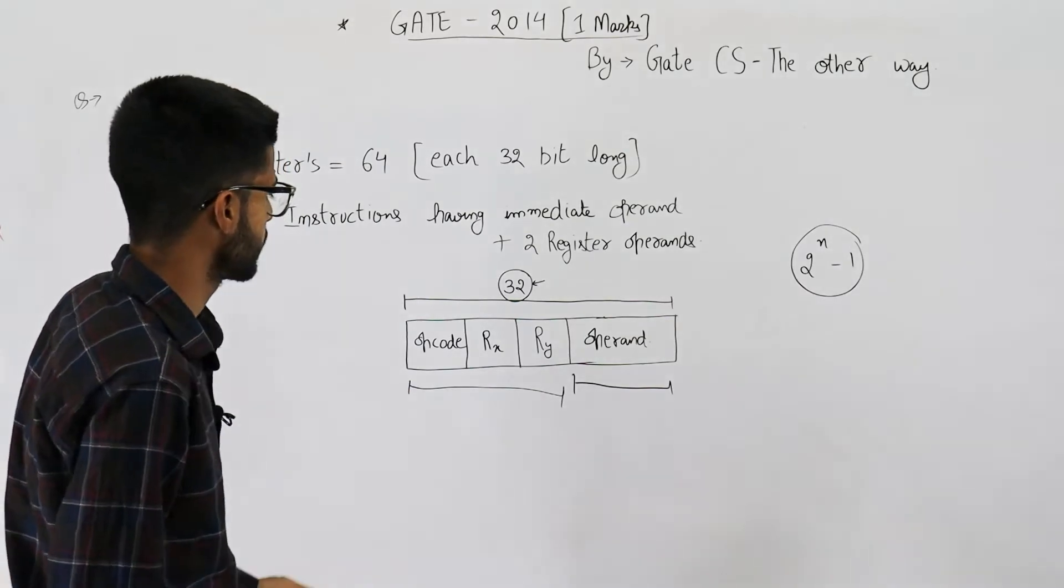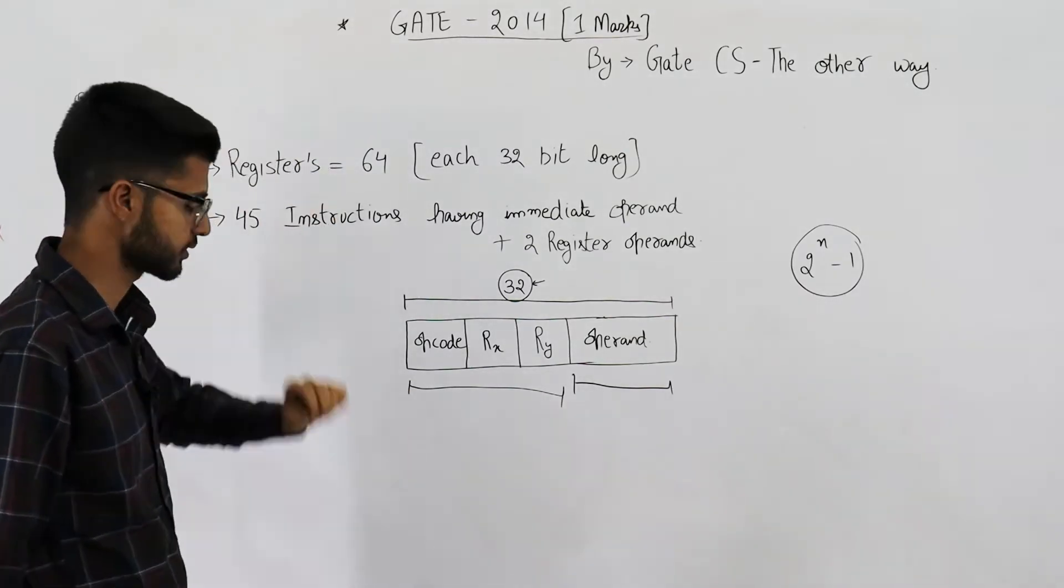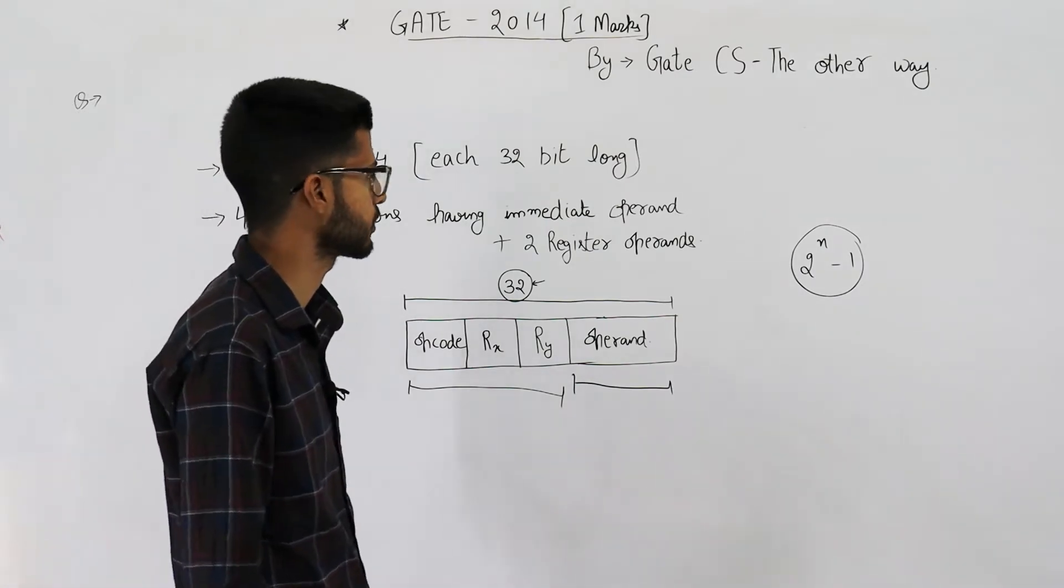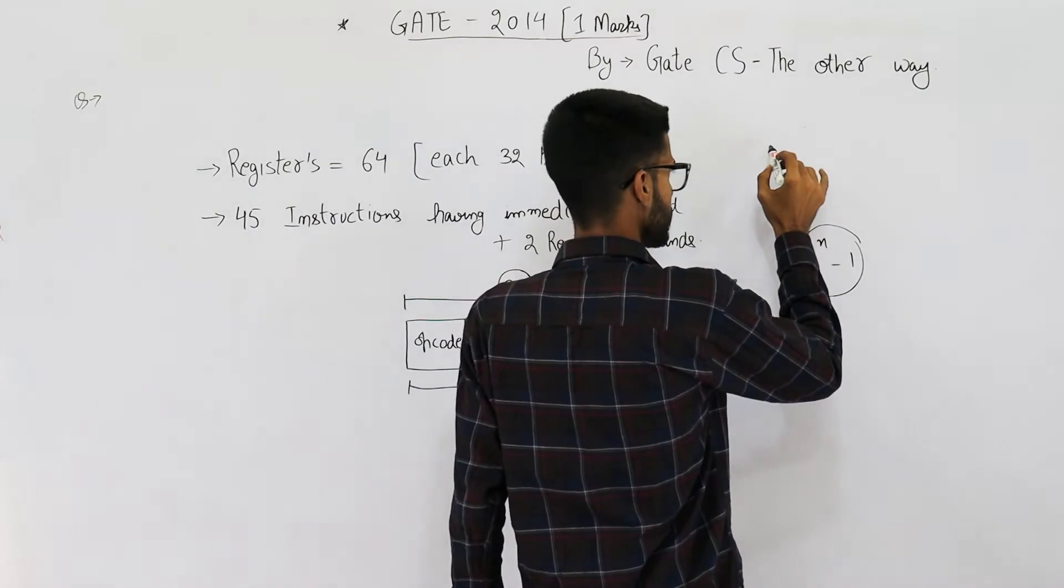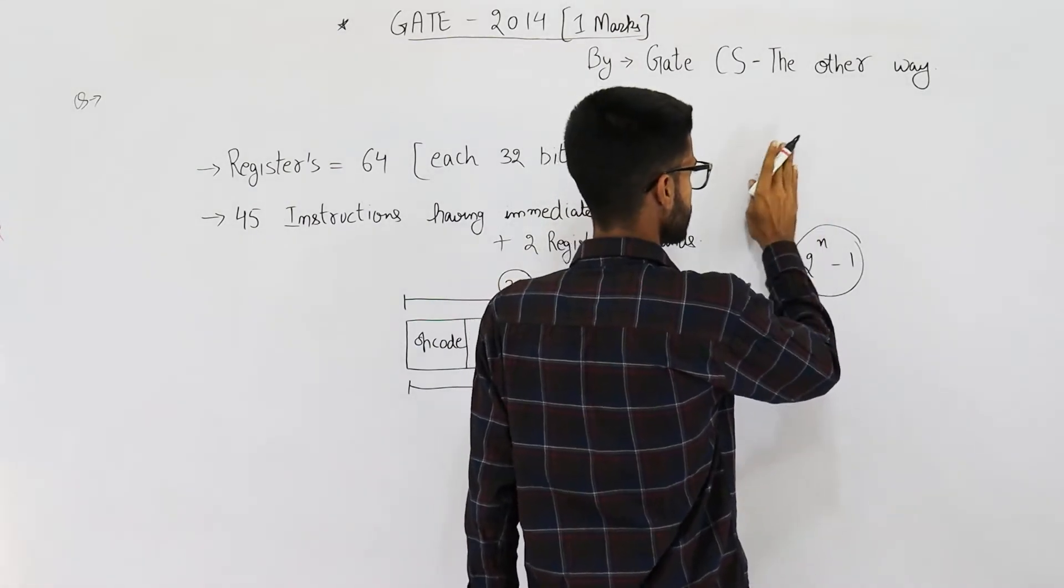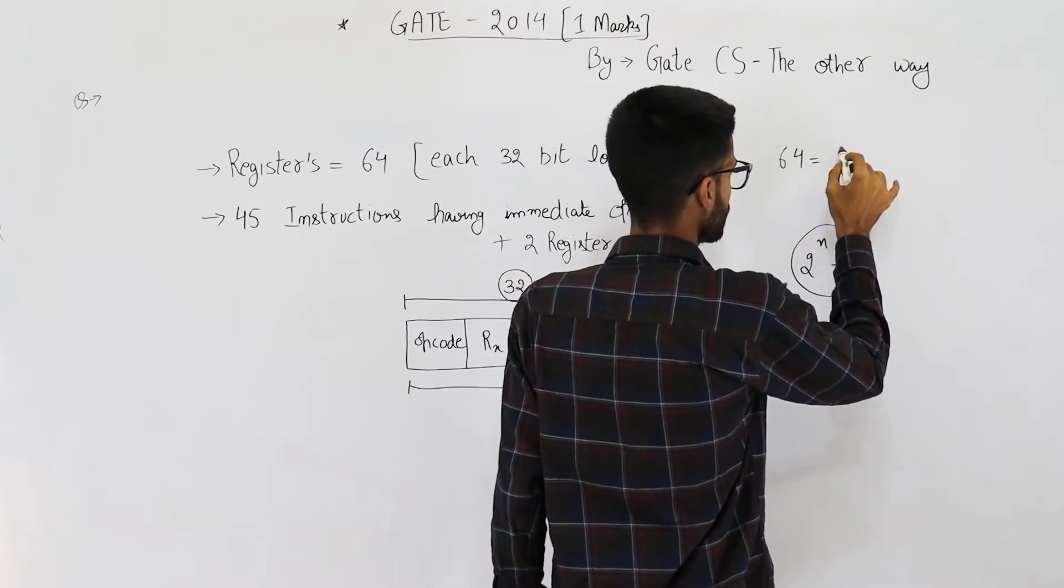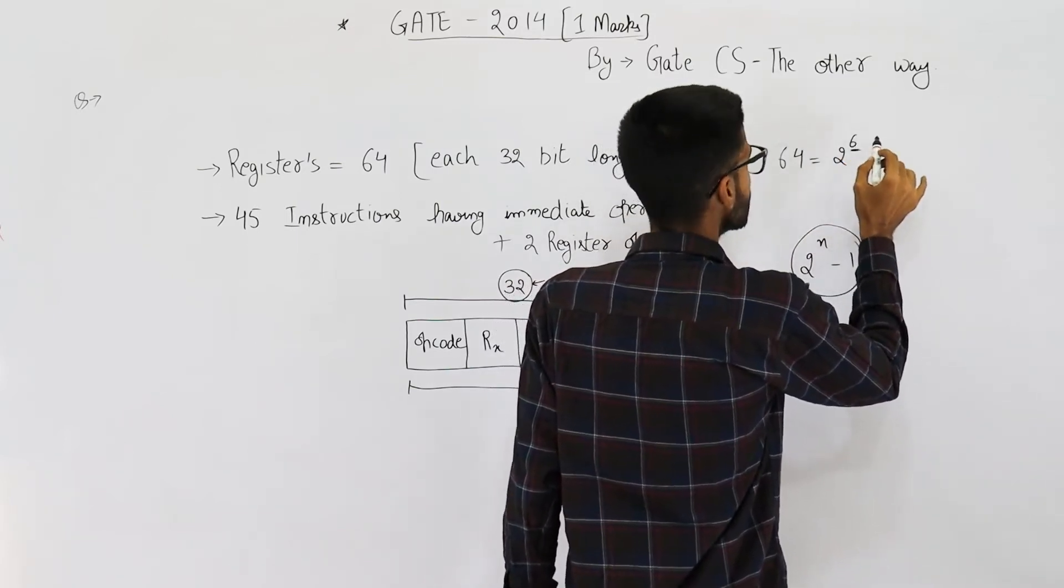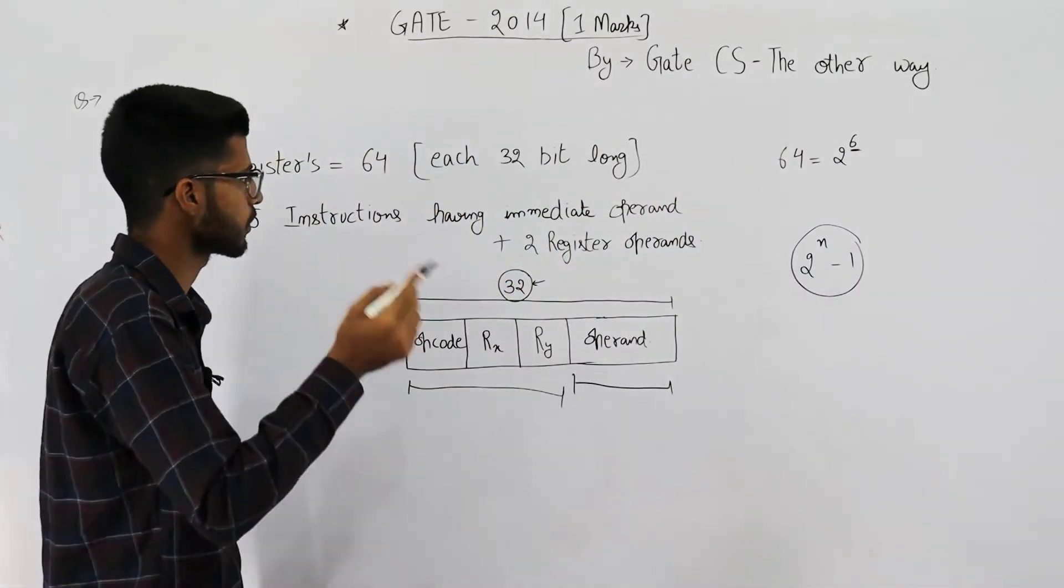So let's find out what this is. First of all, there are 64 registers in our processor or CPU. That means we need 6 bits to specify one of them. 64 is 2 power 6, so we need 6 bits to identify one of the registers out of the 64 registers.